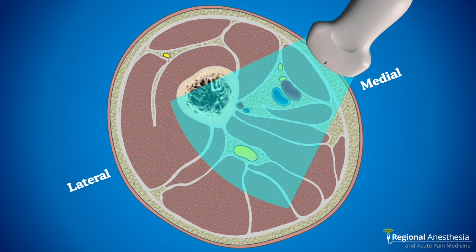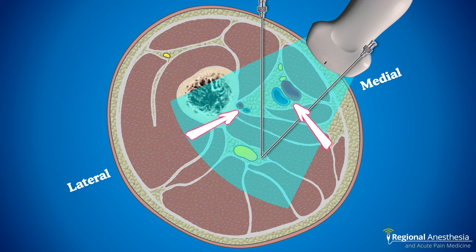There are two common approaches to needle insertion: in-plane from the lateral aspect, and out-of-plane straight down. Both approaches aim to land the needle in the fascial plane either side of the nerve and expand that intermuscular fascial plane with local. You can see there are some vessels to negotiate.